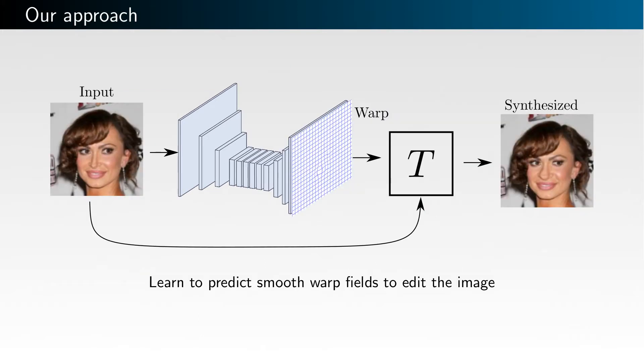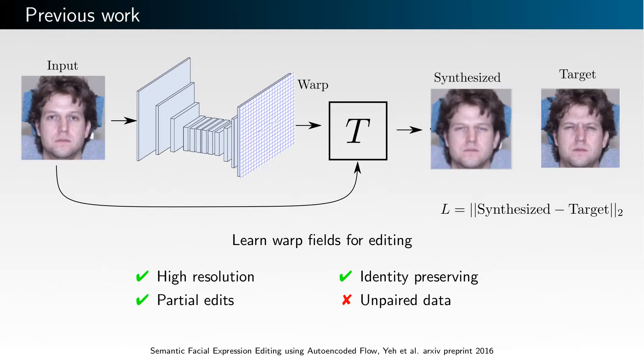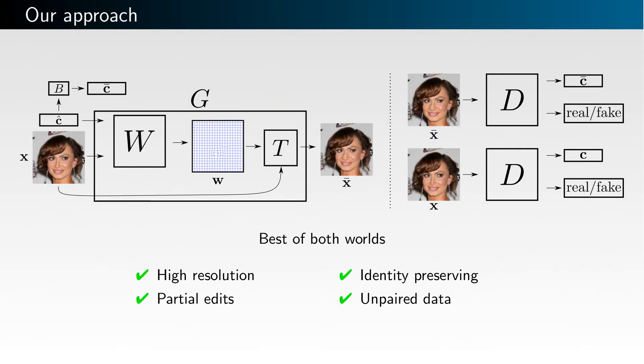In this work we learn to perform semantic image edits through the application of smooth warp fields. Previous approaches that use warping for semantic edits required paired data — that is, example images of the same subject with different semantic attributes. In contrast, we employ recent advances in generative adversarial networks that allow our model to be trained with unpaired data.